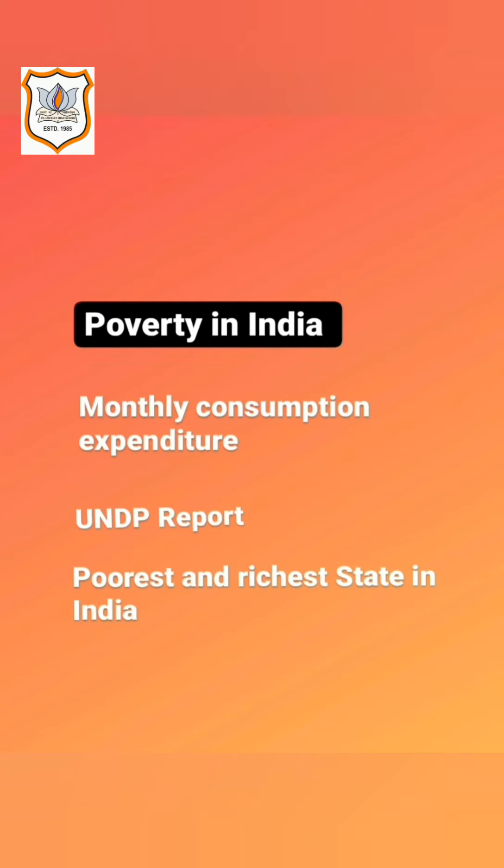The next data is related to the poorest and richest states in India. Chhattisgarh is the poorest state in India with 36.93% BPL population. A major portion of BPL population lives in Chhattisgarh. On the other hand, Goa has the lowest BPL population of 5.09%, making it the richest state. In Gujarat, 16.63% of the population lives below the poverty line.